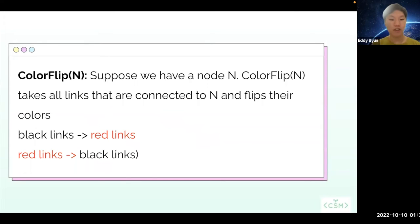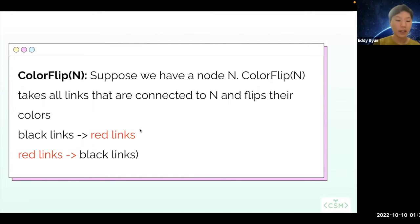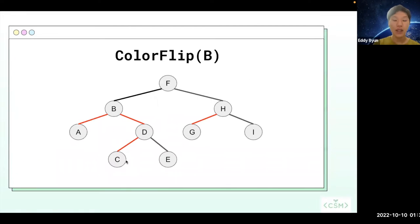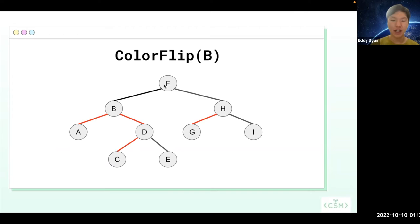The final operation I want to talk about is the color flip operation. So again, suppose we have a node n. What the color flip operation does is it's going to take all the links that are connected to n and flip the color of the links. So any black link attached to node n is now going to be a red link, and any red link attached to n is now a black link. Going back to this tree, suppose I call color flip on b. The links that connect a and b, and b and d, are both red, so they're now going to be black. And the link that connects b and f is black, so we're going to turn it into a red link.